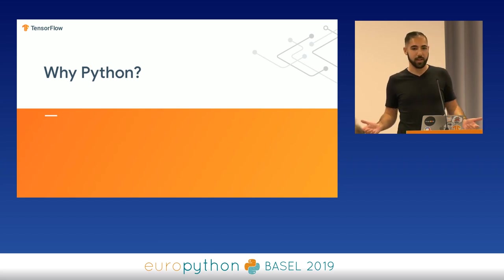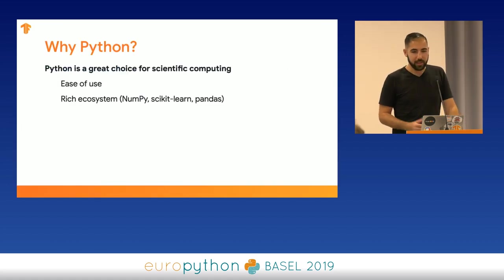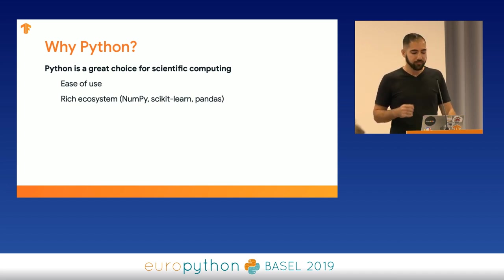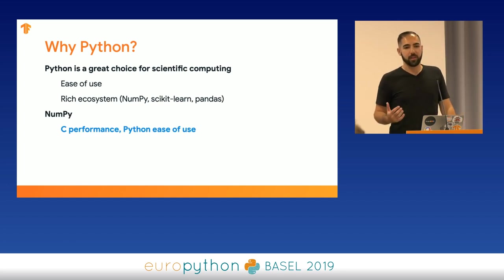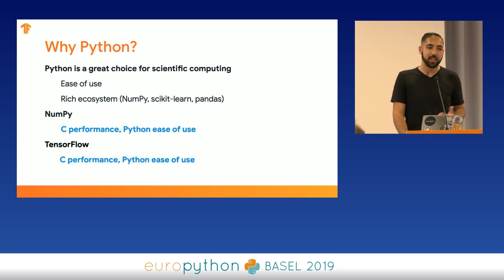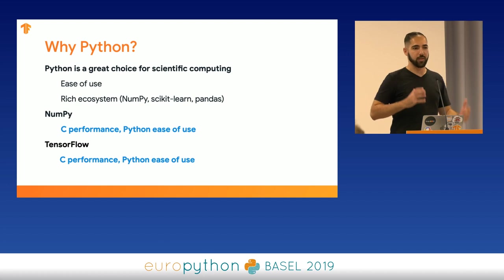Now I want to briefly discuss why Python is so important and why we use Python with TensorFlow. Python is a great choice for scientific computing — it's easy to use and has a rich ecosystem for data science, with tools such as NumPy, scikit-learn, and pandas. NumPy is great because it has the performance of C but the high-level API and ease of use of Python. When TensorFlow was being built, we wanted it to have that same simplicity — the performance of C with the ease of use of Python.